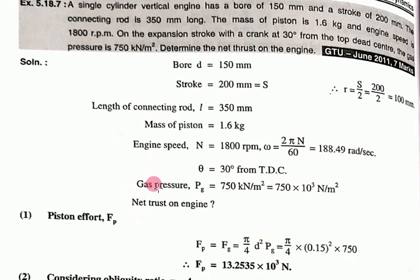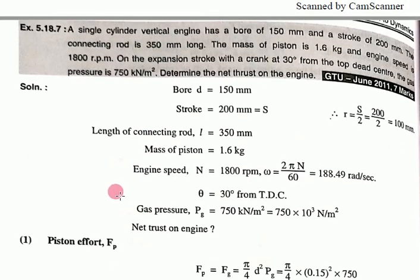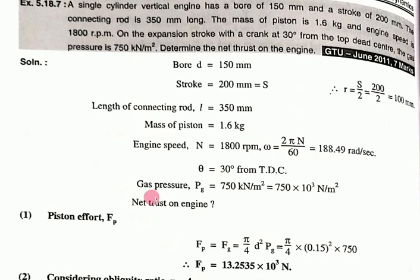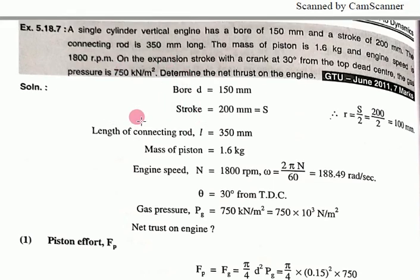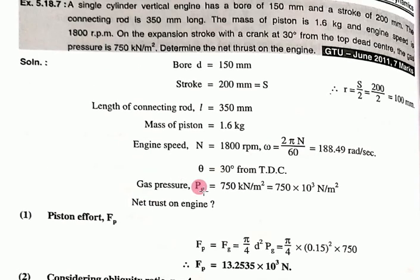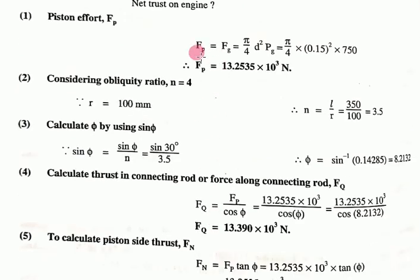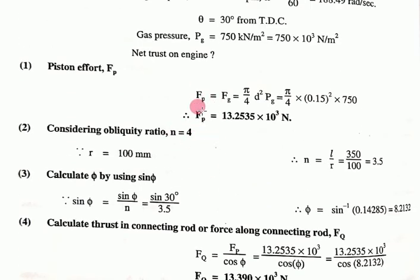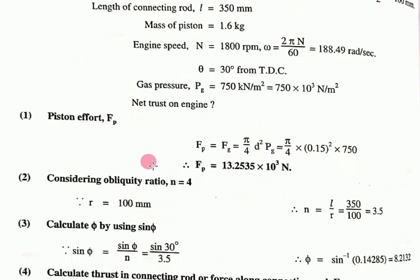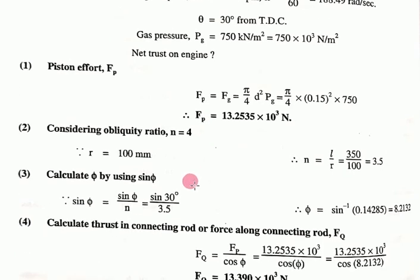Third example: single cylinder vertical engine with 150 mm bore diameter and 200 mm stroke, meaning 100 mm radius. This is from June 2011 for 7 marks. Don't miss this chapter because it's very easy and you can get good marks. Even though it's a vertical engine, they have not calculated the inertia force.